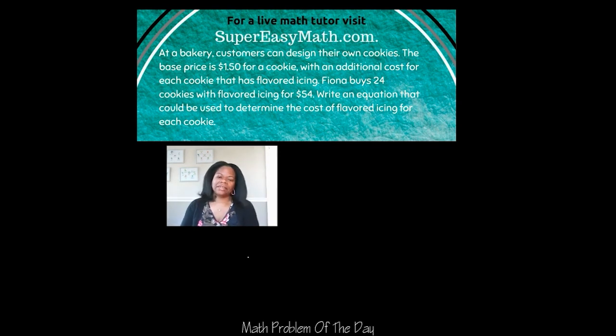So I know that I need to take that 1.5 and add it to a mystery amount, which we'll just call X, to get the cost of one cookie plus the icing because this is the cookie cost and this is the icing cost.